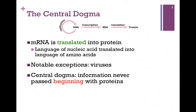And now for our notable exception: viruses. Many of them begin as an RNA genome, and so the simple thinking of the central dogma as going from DNA to RNA to protein isn't applicable in that case. So instead, let's modify that central dogma. Information is passed to protein, but it never begins with protein and goes in the other direction.